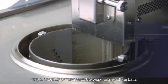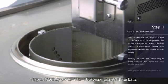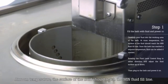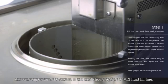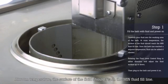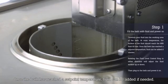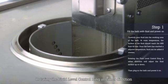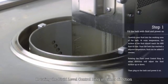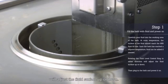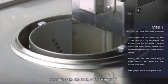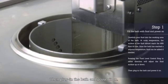Step 1: Carefully pour fluid into the working area of the bath. At room temperature, the surface of the fluid should reach the min-fluid fill line. Once the bath has reached a set point temperature, fluid can be added if needed. Rotating the fluid level control ring in either direction will adjust the fluid surface up or down. Then, plug in the bath and power it on.